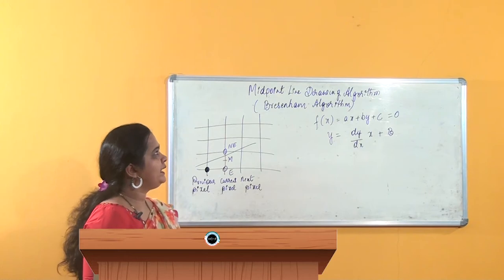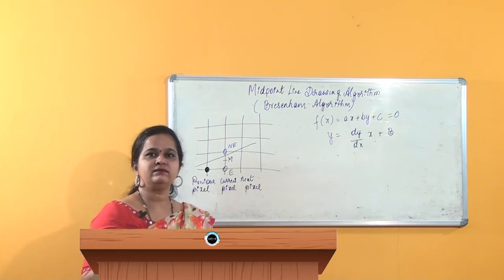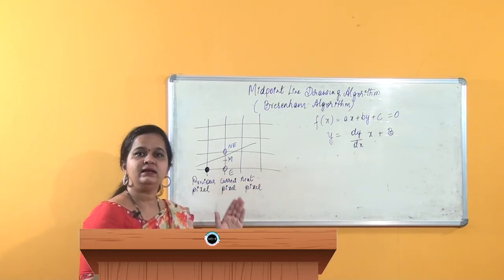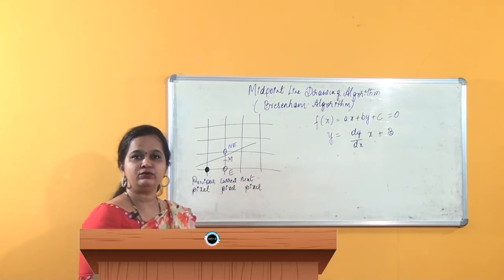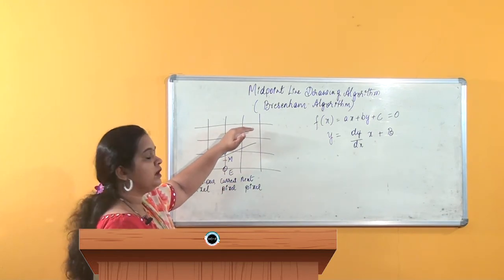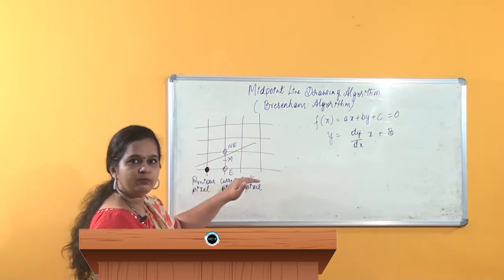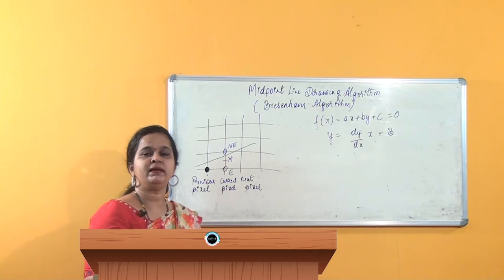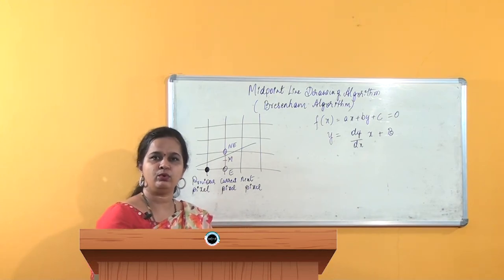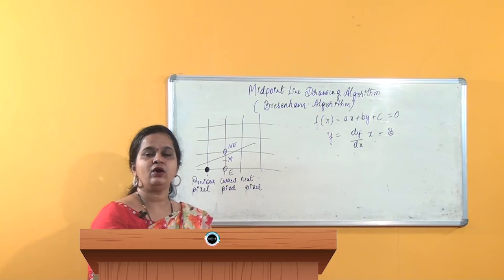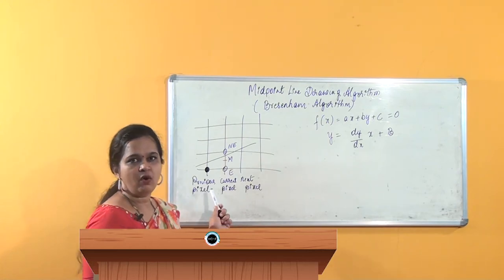This midpoint line drawing algorithm always makes a decision at every step. Every time it moves to the next pixel, it decides whether to select the NE pixel or the E pixel — the above one or the below one. It keeps making these decisions as it progresses, and this is how the line algorithm is actually formed.